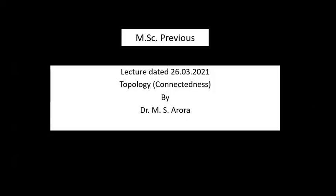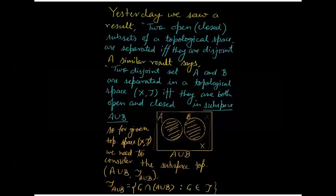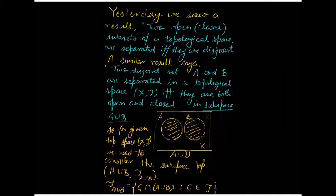Today we are talking about connectedness. We started talking about connectedness, and what we saw yesterday was that if we take two open or closed subsets of a topological space, then they are separated if and only if they are disjoint. The condition of being separated is a stronger condition than just being disjoint — merely being disjoint does not make sets separated.